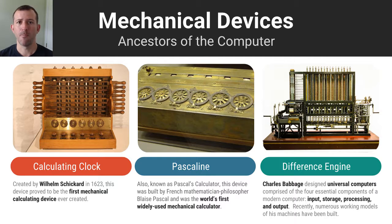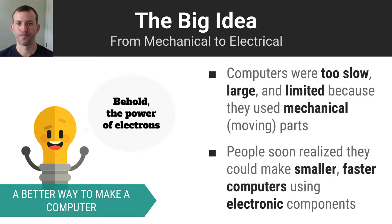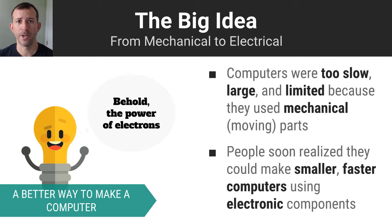We progressed as human beings into more complex mechanical devices like the calculating clock, the Pascaline, and many devices that Charles Babbage envisioned, like the difference engine. The computer is really made possible by electricity. Mechanical, big, clumsy devices with huge moving parts were never going to get the job done. People soon realized that by harnessing the power of the electron, they could make electrical components to build a computer that was fast, small, and powerful.